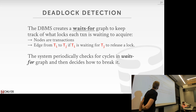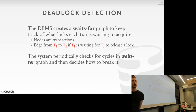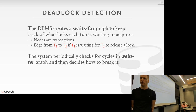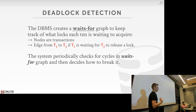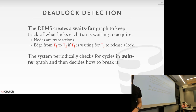With deadlock detection, a background thread looks at the lock manager's metadata and builds a waits-for graph, where every node is a transaction and every edge points to another node that holds a lock that transaction wants. You can balance how frequently this runs. If a cycle is found using your favorite cycle detection algorithm, you have to decide what to do about that deadlock.